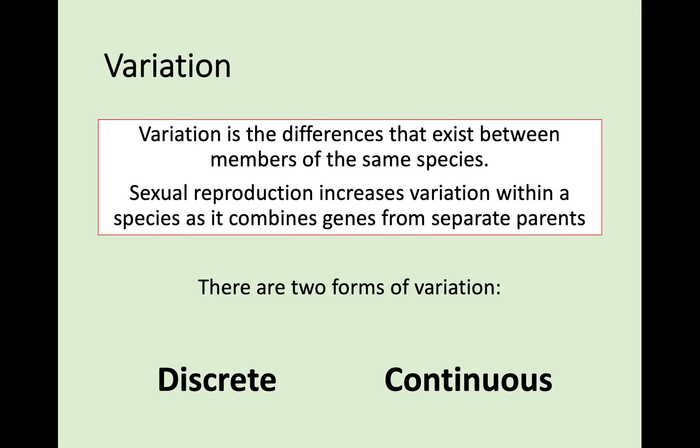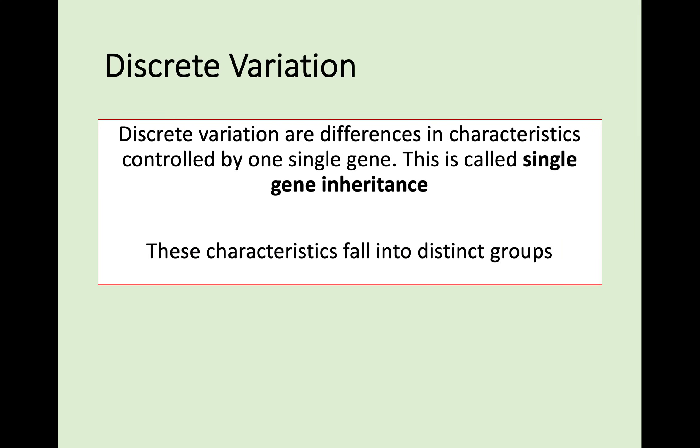Before we go on, there are two different types of variation that we need to know: discrete and continuous variation. First of all, discrete variation — there are differences in characteristics which are controlled by one single gene, so this is called single gene inheritance. Different types of discrete variation fall into distinct groups. You look like something or you don't, you have something or you don't. There's no range between them.